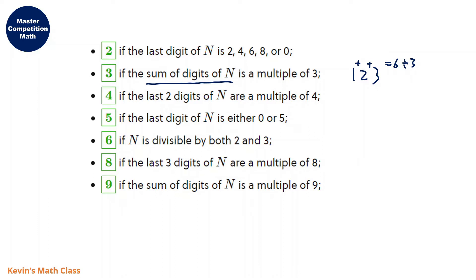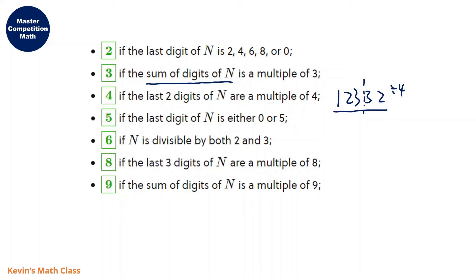And for four, if the last two digits of n are a multiple of four. For example, we have a very big number 12332. If we want to check if this number is divisible by four, we just need to check the last two digits. So 32 is divisible by four, so this whole number is divisible by four. The reason is that you can expand the number into 12300 plus 32, and since 12300 is a multiple of 100, and 100 is always divisible by four, that's why we only need to worry about the last two digits.